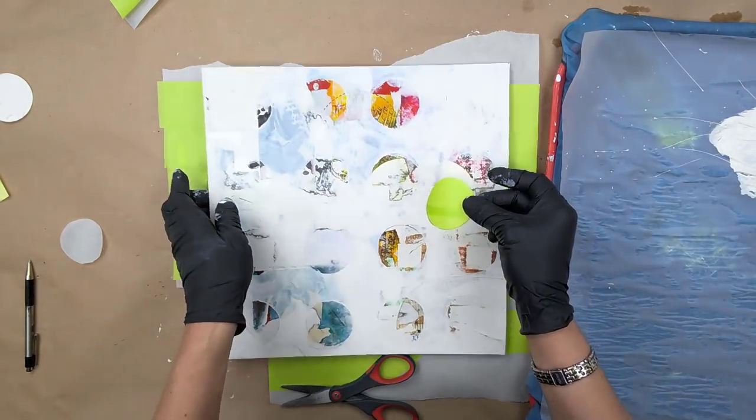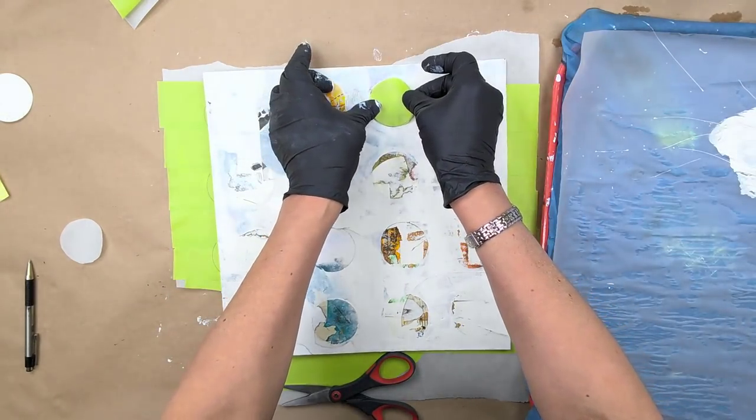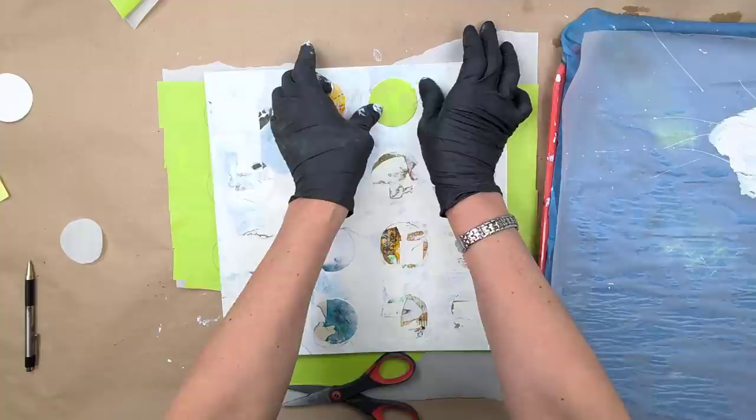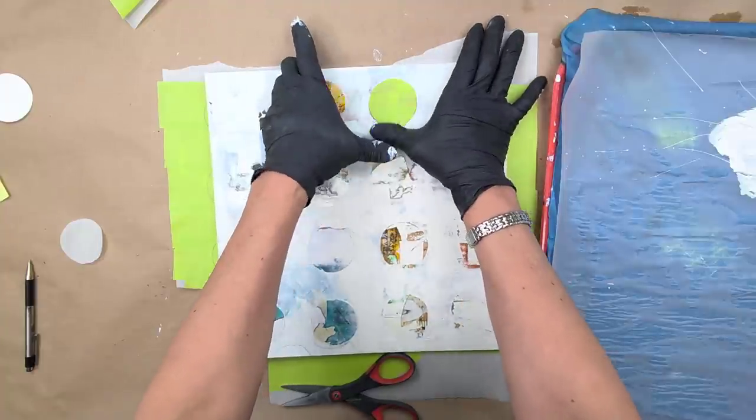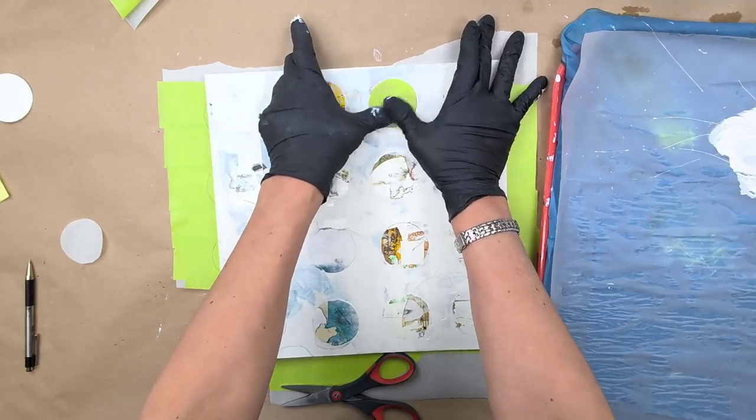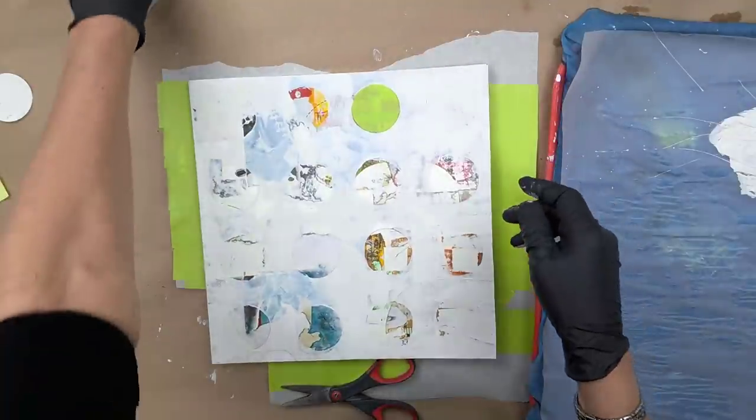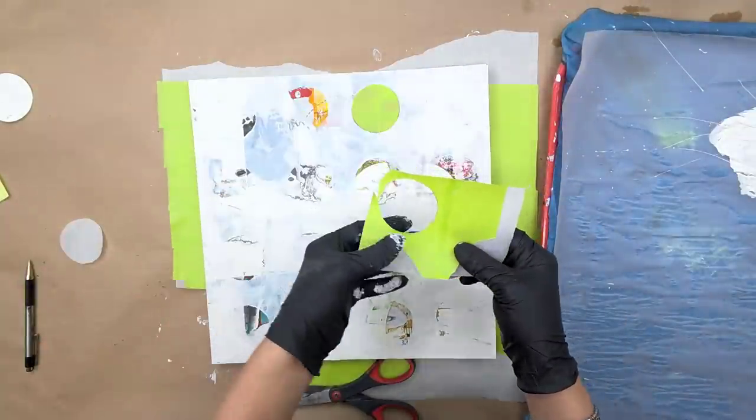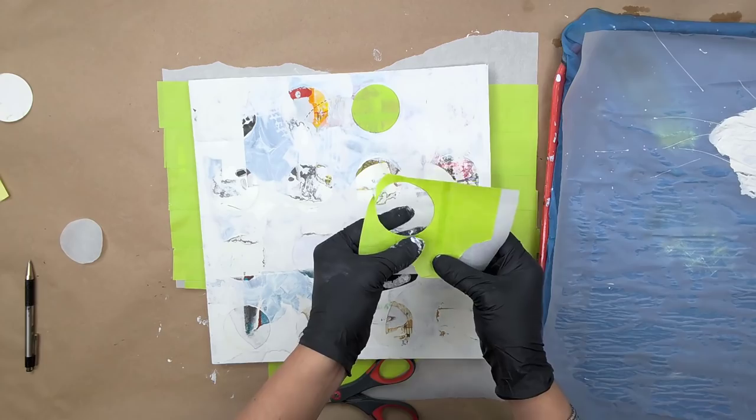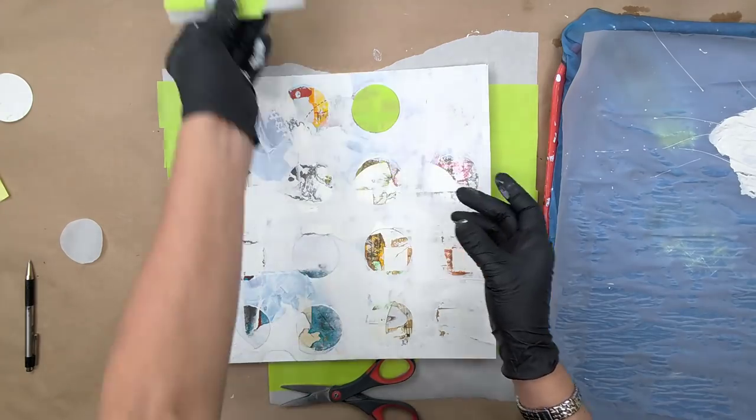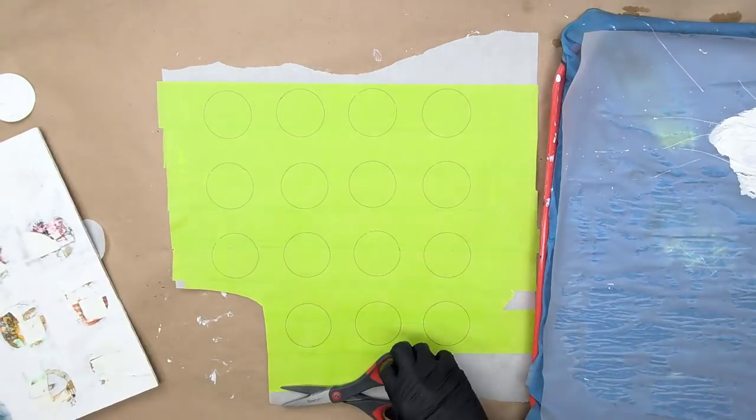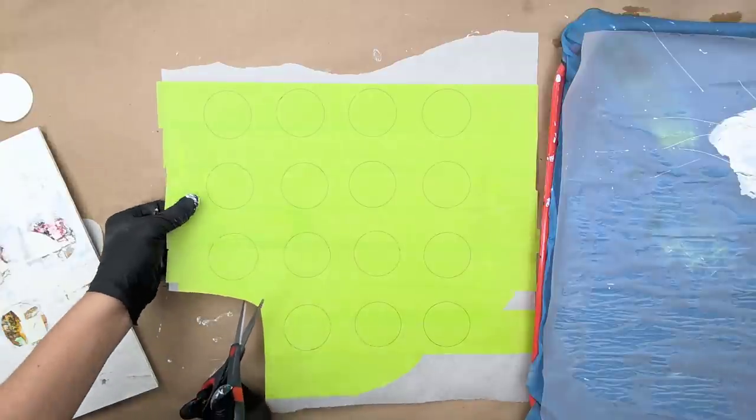So I put it on here, and it should stick pretty well. You just want to really get those edges. I should have done this first, but I didn't think of it, so that's okay. And then you've got this negative shape, which could be very cool. But I'm going to save these for later because these could be handy later. So now I just have to cut all these guys out.